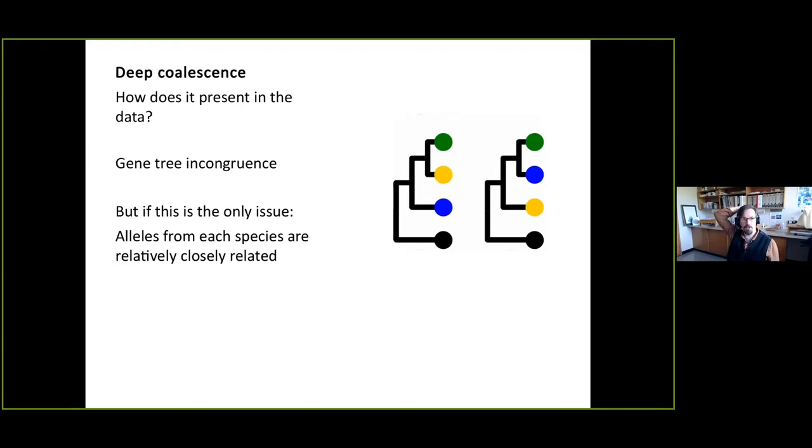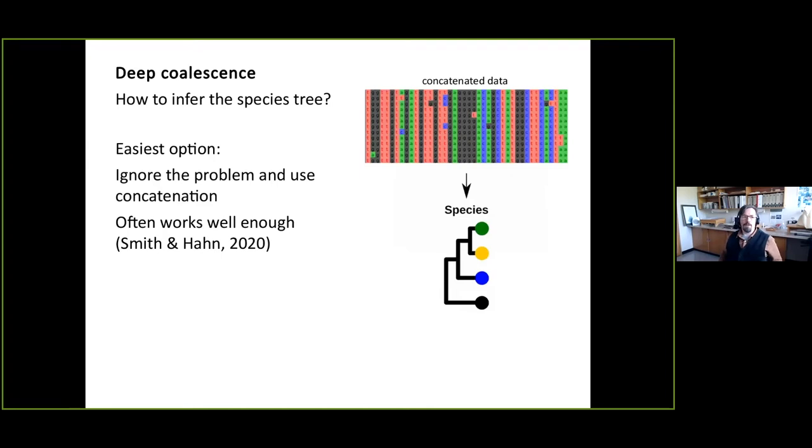How does deep coalescence then present in our gene trees? Well, quite simply, we have gene tree incongruence. But if that is the only issue that's affecting our data, then at least the alleles from each species are relatively closely related still with each other. So we do have a problem of how we reconcile this to a species tree, but the major groups should always come out more or less the same.